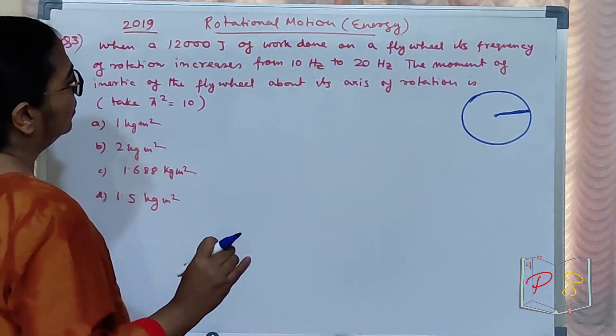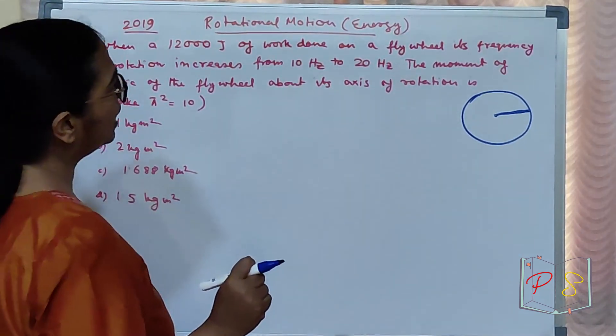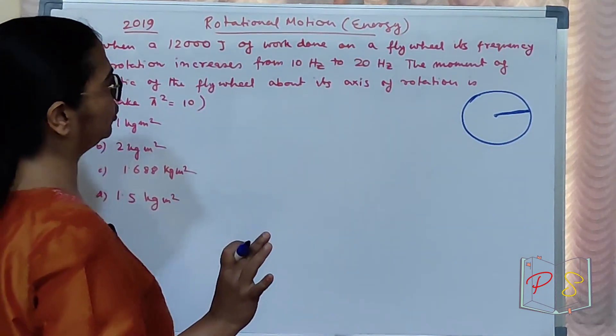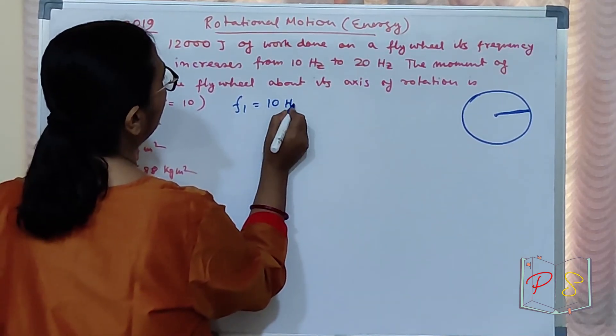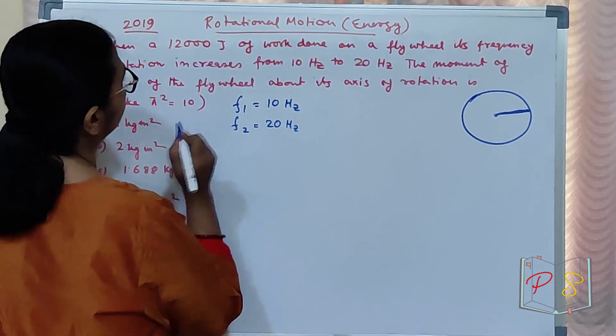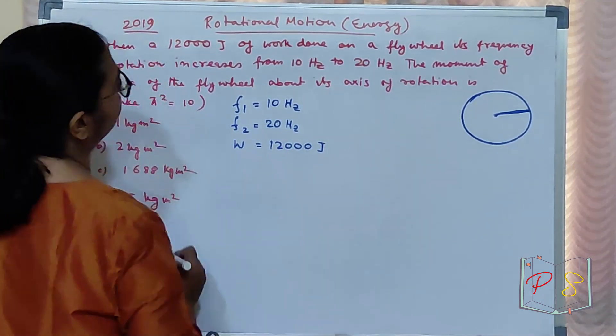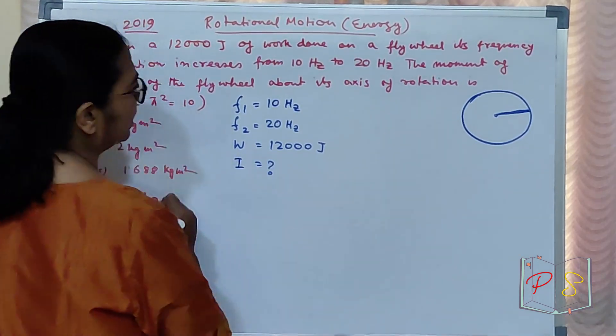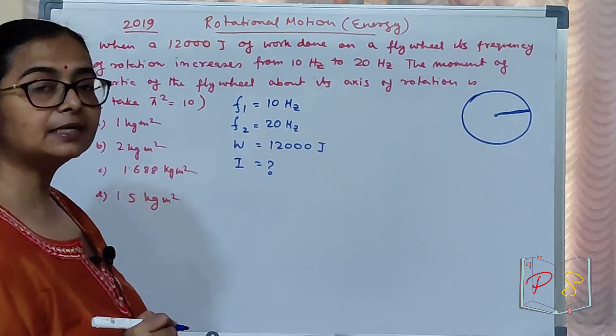Kya karenge? Isko kuch kam kiya and iska frequency change ho gaya. Frequency, initial frequency f1 kya tha? 10 hertz. Next ho gaya, f2 ho gaya, 20 hertz. Kam kitna kiya? Work kitna kiya? 12000 joule. Itna kiya hai? I kya hai? Woha aapko nikalne ke liye bola hai. Flywheel kya hai bol diya.